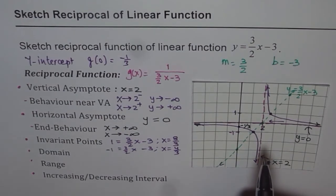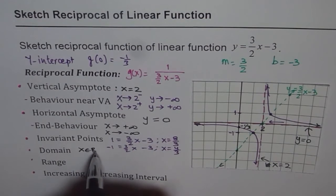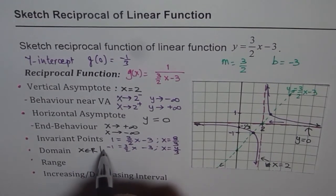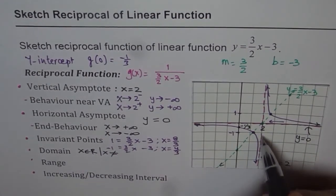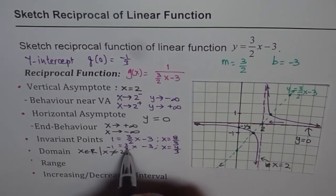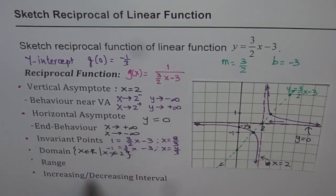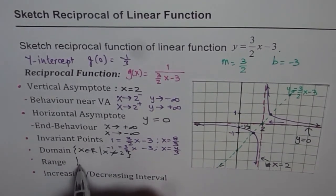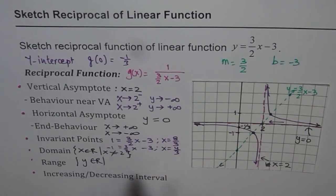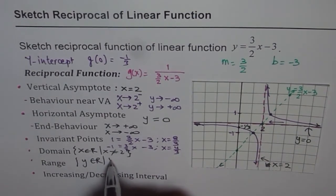From the graph we can write the domain: x belongs to all real numbers where x is not equal to 2, due to the vertical asymptote. The range is y belongs to all real numbers where y is not equal to 0, which is the horizontal asymptote.